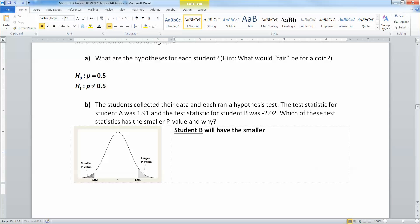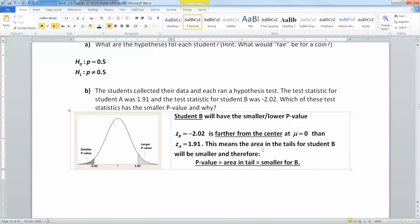Now let me type up why. Negative 2.02 is farther from the center at mu equals 0 than the 1.91. And that means the area in the tail is going to be smaller than student A.